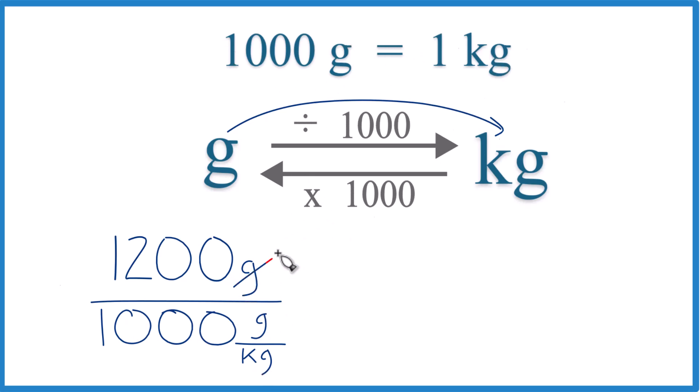But now the grams on top and the bottom cancel out, we're going to be left with kilograms. That's our answer. So let's move our decimal place 1, 2, 3. So that's just 1.